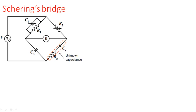Hi everyone. In this video I am going to explain about the Schering bridge and how to calculate the unknown components like Cx and Rx. In the previous videos I have explained Maxwell's bridge and Hay's bridge and their problems also.